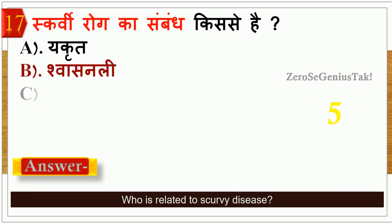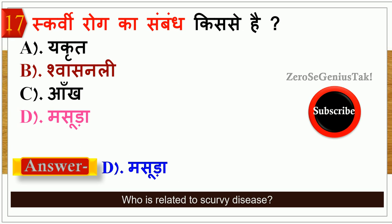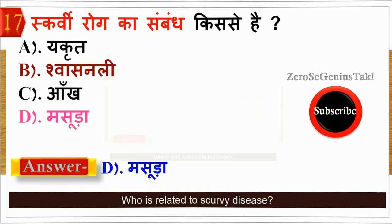RG ka symbol kis se hai? So its correct answer will be option number D — Masura. Basic question tha.